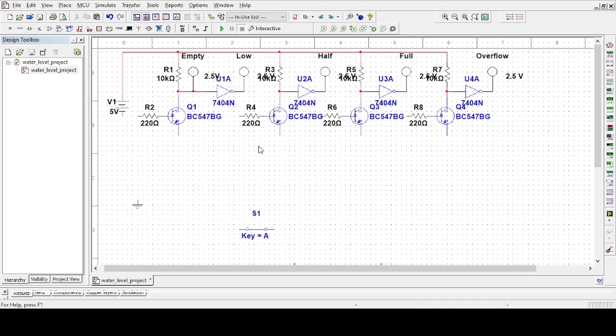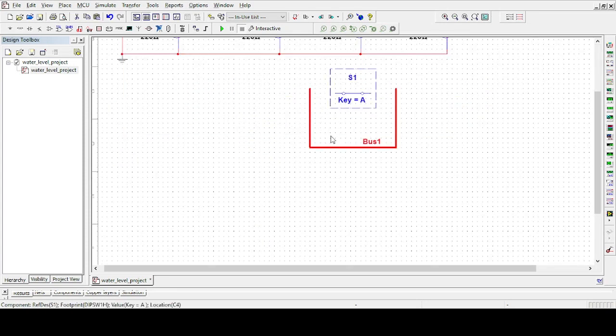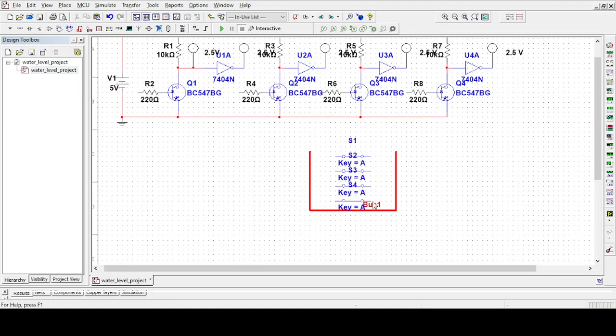There will be four switches at different levels. Now connect the switch to the 5 volt, and the other side with the first base. Do the same for the rest.